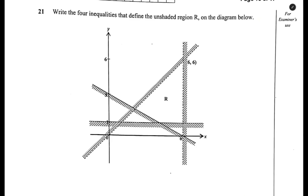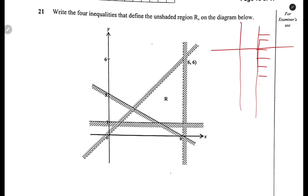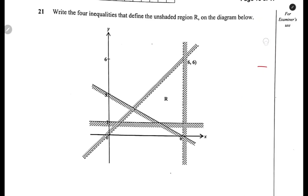The question reads: write the four inequalities that define the unshaded region on the diagram. So how do we write the four inequalities that describe the unshaded region, which is R? The way you deal with this one, you start with the easy one. The vertical or horizontal lines are the easy ones to start with, because these contain only one variable.